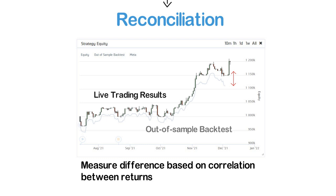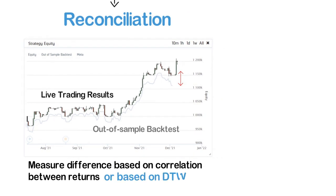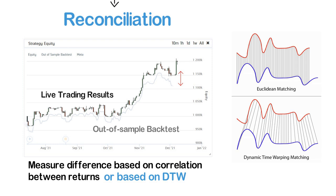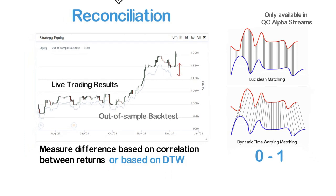Besides looking at the chart for visual analysis, there are also different metrics you can use to measure the reconciliation. One such metric is the correlation between the returns generated by the backtest and the actual returns — the closer to one this correlation is, the more correlated the returns are. Another metric is the dynamic time warping distance, or DTW in short. A DTW value closer to zero means the two sequences are more similar. For intuition, an annualized DTW value of 0.2 means about a 20% deviation between the backtest and actual performance over one year. Note that these two metrics are currently only available for alpha streams, not live trading.